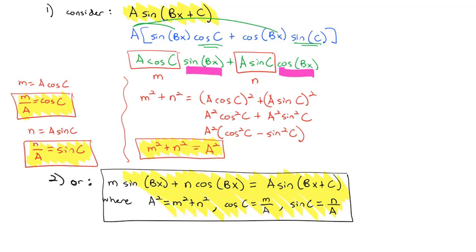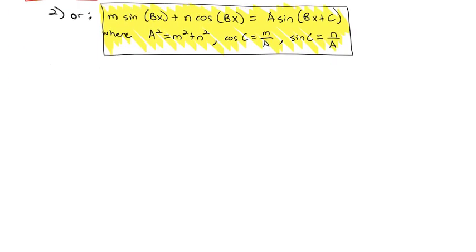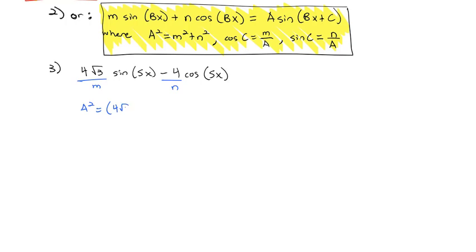That summarizes how we're going to write an expression with sine and cosine as a single sine. For example, if we see 4√3·sin(5x) − 4·cos(5x), we can rewrite this as a single sine. Here, m = 4√3 and n = −4. So a² = (4√3)² + (−4)² = 48 + 16 = 64, meaning a = √64 = 8.